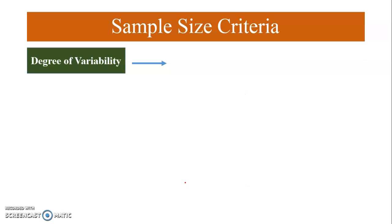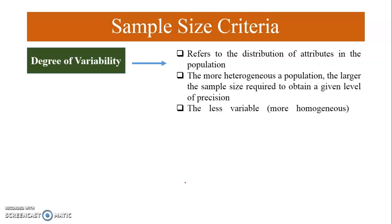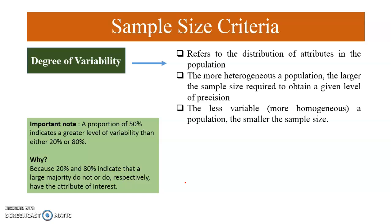The degree of variability refers to the distribution of attributes in the population. The more heterogeneous the population, the larger the sample size required; for a homogeneous or less variable population, a smaller sample is required. Note that a proportion of 50% indicates a greater level of variability than either 20% or 80%. In the case of 20%, 20% of students follow the practice and 80% do not, so the maximum majority — 80% — does not follow it.